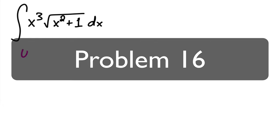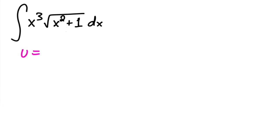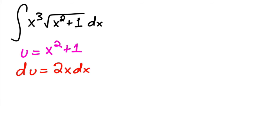The next tricky problem: you might automatically think u = x² + 1 for the inside. But then du = 2x dx, and you have extra x's. Since you have experience with this kind of problem, you plow through anyway — du = 2x dx — because sometimes that's how things work out.